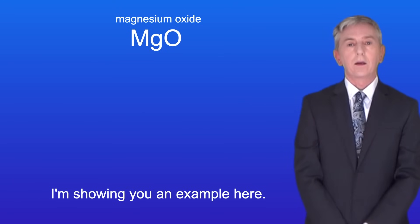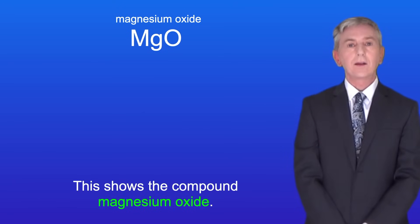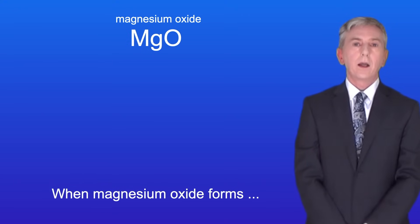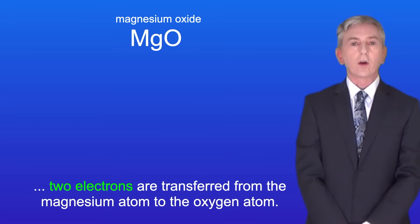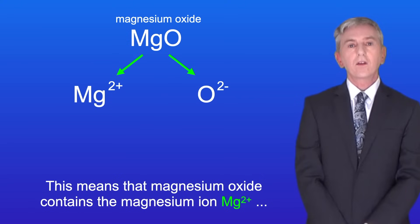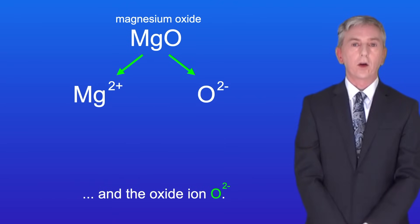I'm showing you an example here. This shows the compound magnesium oxide. Now when magnesium oxide forms, two electrons are transferred from the magnesium atom to the oxygen atom. This means that magnesium oxide contains the magnesium ion Mg2+ and the oxide ion O2-.